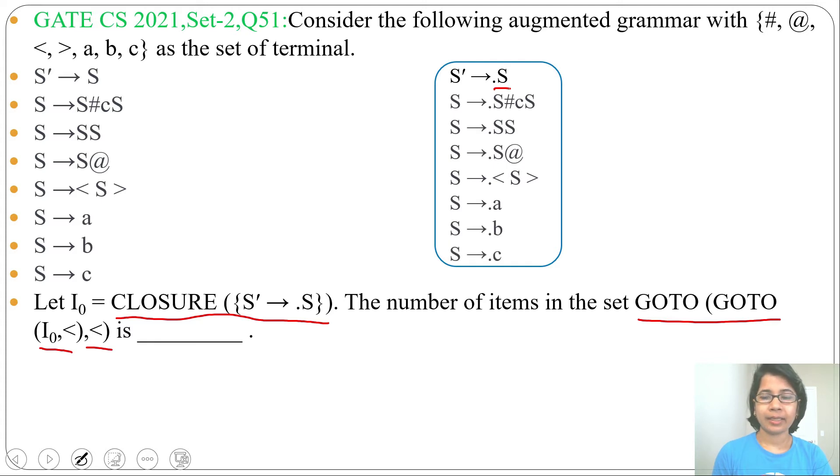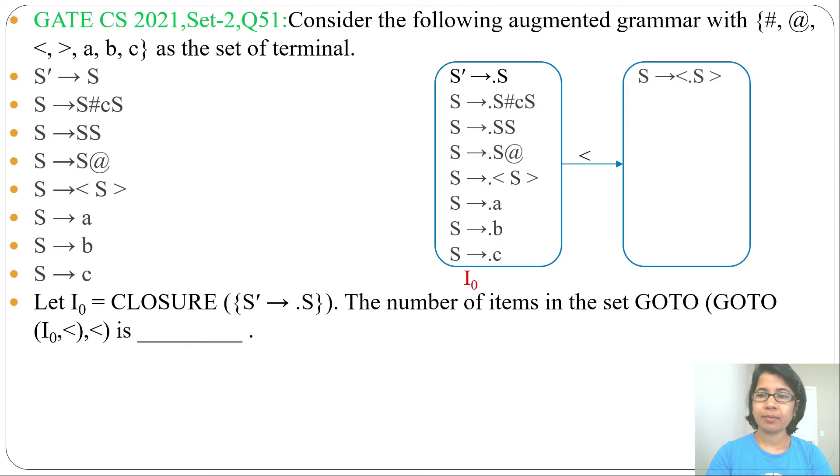And this will be our state I0. Now from I0 state by less than symbol it will go to another state where the LR0 item will be S derives less than dot S greater than. Here dot was before less than, now dot is after less than. And dot symbol is before S, so we need to add closure of it.